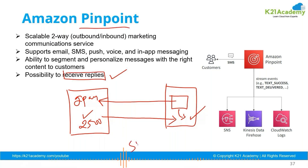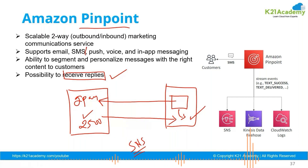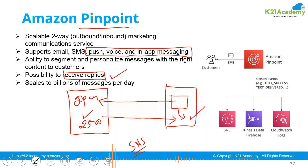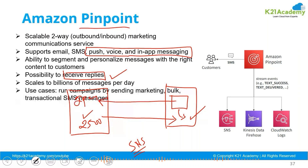In SNS we were only able to send notifications — we were not able to receive them. Moreover, push, voice, and in-app notifications were not possible in SNS. But with Pinpoint you can basically reach your customer from everywhere — that is what Amazon's Pinpoint service is.